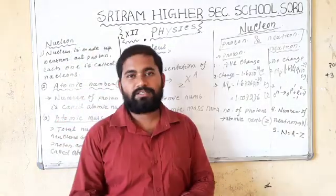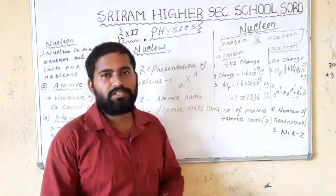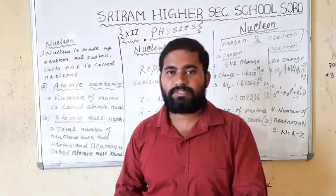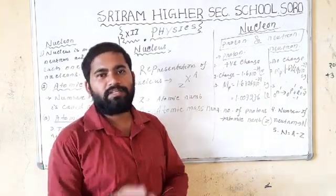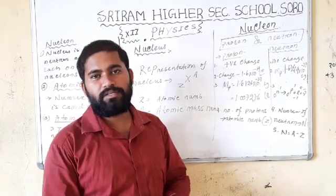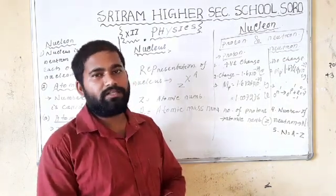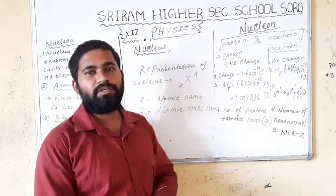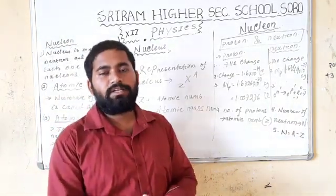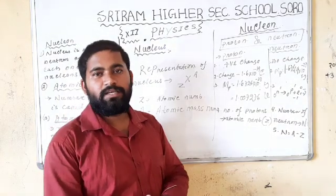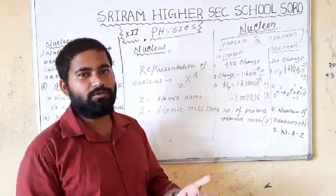So let us discuss another chapter, that is Nucleus. As we discussed in Geiger and Marsden's experiment, the total space of an atom is empty and there is a very small core region that exists inside the atom where the total positive charge exists. That core region we name as Nucleus. When we observe the nucleus we find there are a large number of particles that exist inside the nucleus. So let us discuss in more detail about the nucleus.